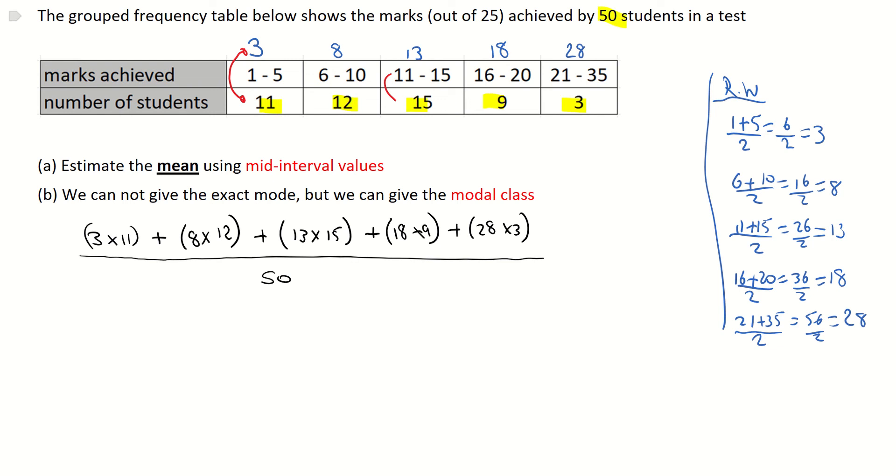I add all of these values together and it gives me 50, but they tell us that in the top in the question there's 50 students. Working all these out now, 3 by 11 is 33, 8 by 12 is 96, 13 by 15 is 195, 18 by 9 is 162, and 28 by 3 is 84, and once again all over 50. Adding the top line I get 570 divided by 50 students, and 570 divided by 50 is a mean mark or an average mark of 11.4. So my mean using mid-interval values is 11.4 marks.